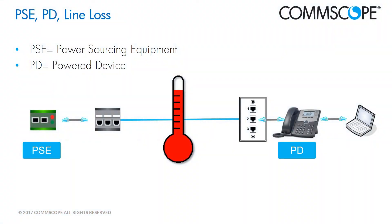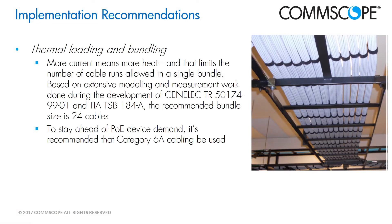Why is cable bundle size important now? PoE offers incredible potential but also comes with its own limits and restrictions that can impact how a network is designed and deployed. As newer PoE standards allow higher power levels over UTP cabling, and as more and more PoE devices start using this capability, the line loss, heat dissipation, and number of powered cables in a bundle are factors that take more relevance. TIA has determined that a bundle of 24 cables should be the maximum recommended. Comscope recommends Category 6A cable to stay ahead of PoE demand.